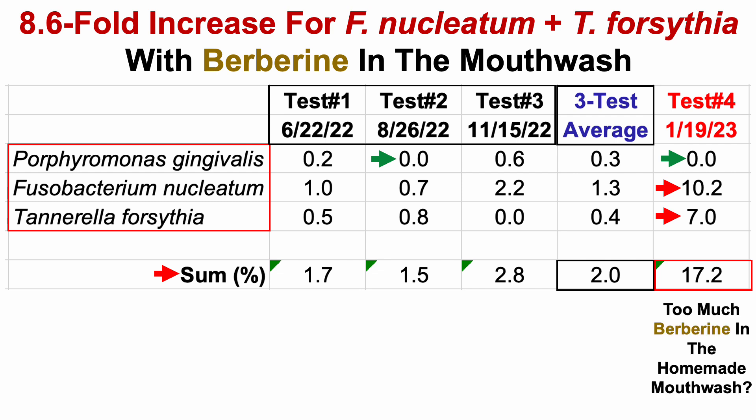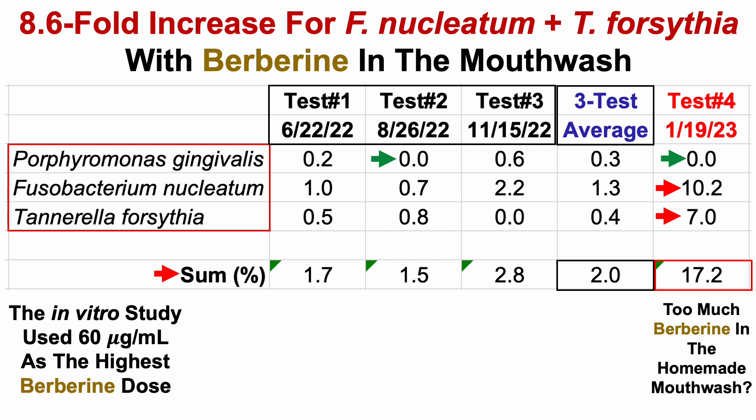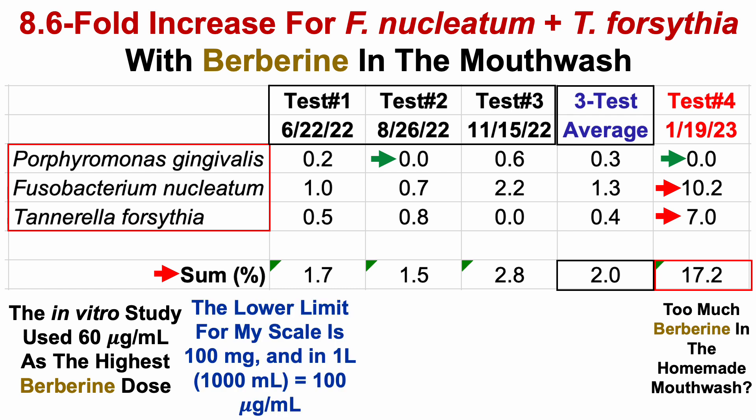The question is: was it just too much berberine? In the in vitro study, the highest dose used was 60 micrograms per milliliter. My scale's lower limit is 100 milligrams, and in one liter of water that equals 100 milligrams per milliliter — far higher than the highest dose in the in vitro study. So it's possible I overshot the berberine concentration. I've since removed berberine from the mouthwash.